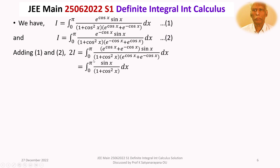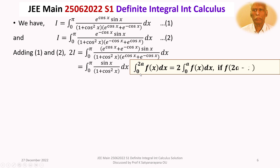So 2I equals the integral from 0 to π of sin x / (1 + cos²x) dx. We apply the property: the integral from 0 to 2a of f(x) dx = 2 times the integral from 0 to a of f(x) dx, when f(2a − x) = f(x). Here 2a = π. Since sin(π − x) = sin x and cos²(π − x) = cos²x, the function is symmetric, so 2I = 2 times the integral from 0 to π/2 of sin x / (1 + cos²x) dx.